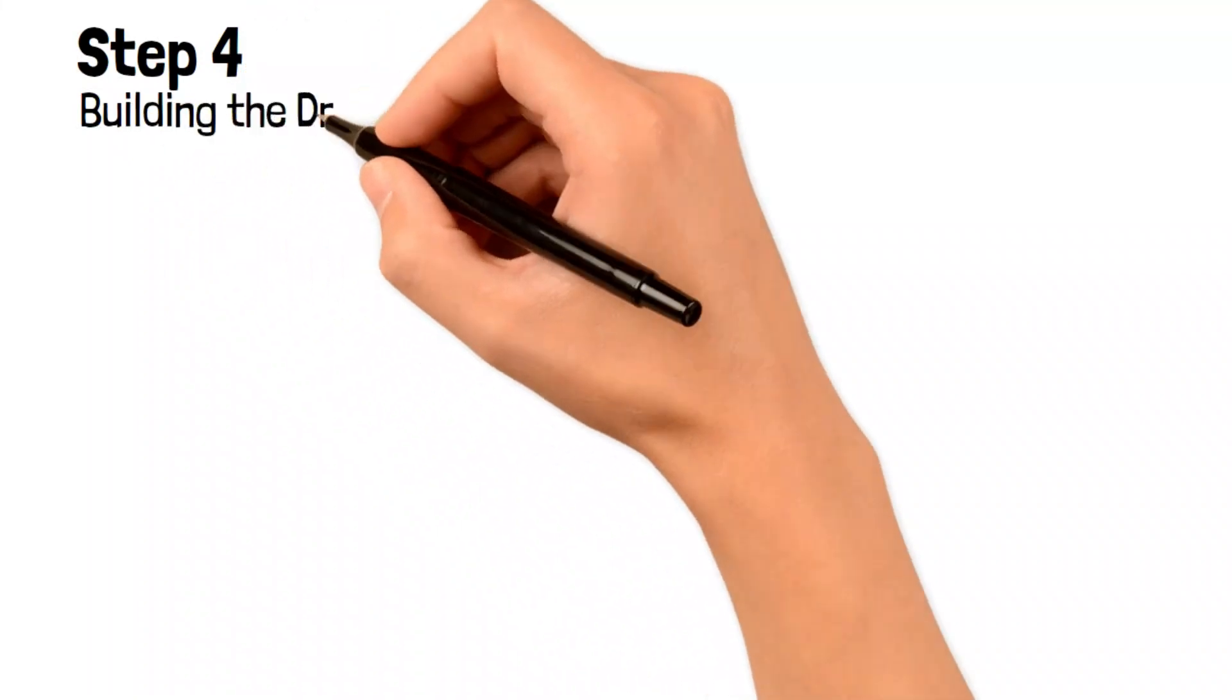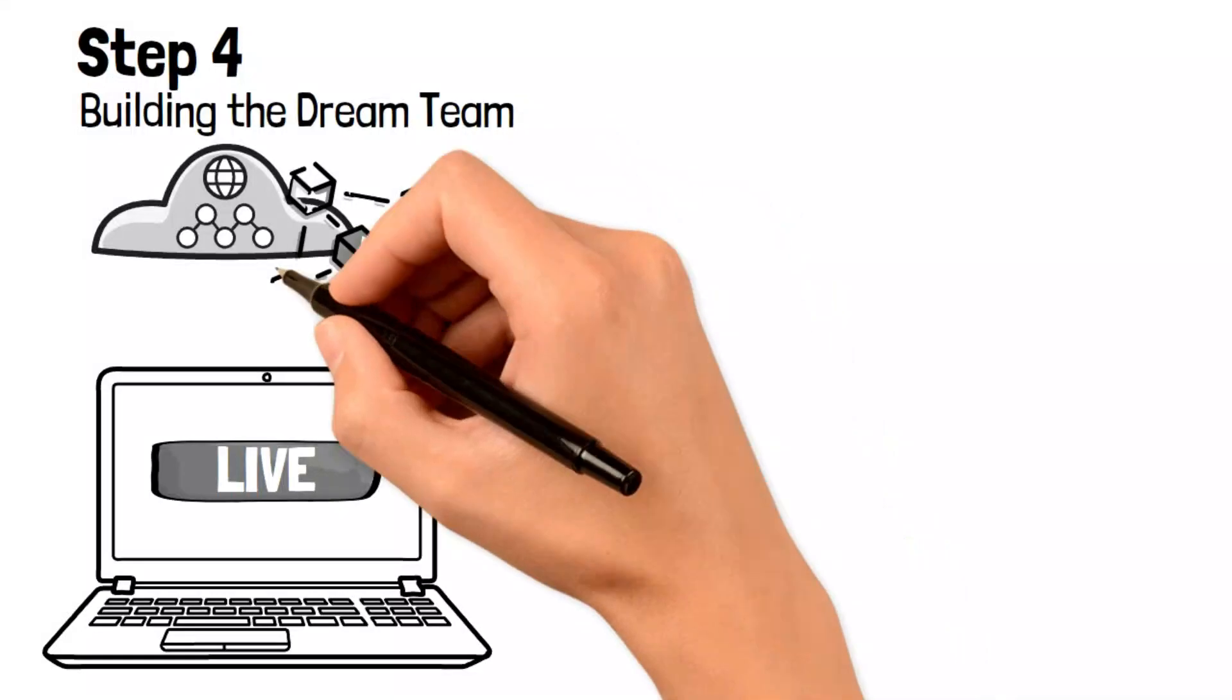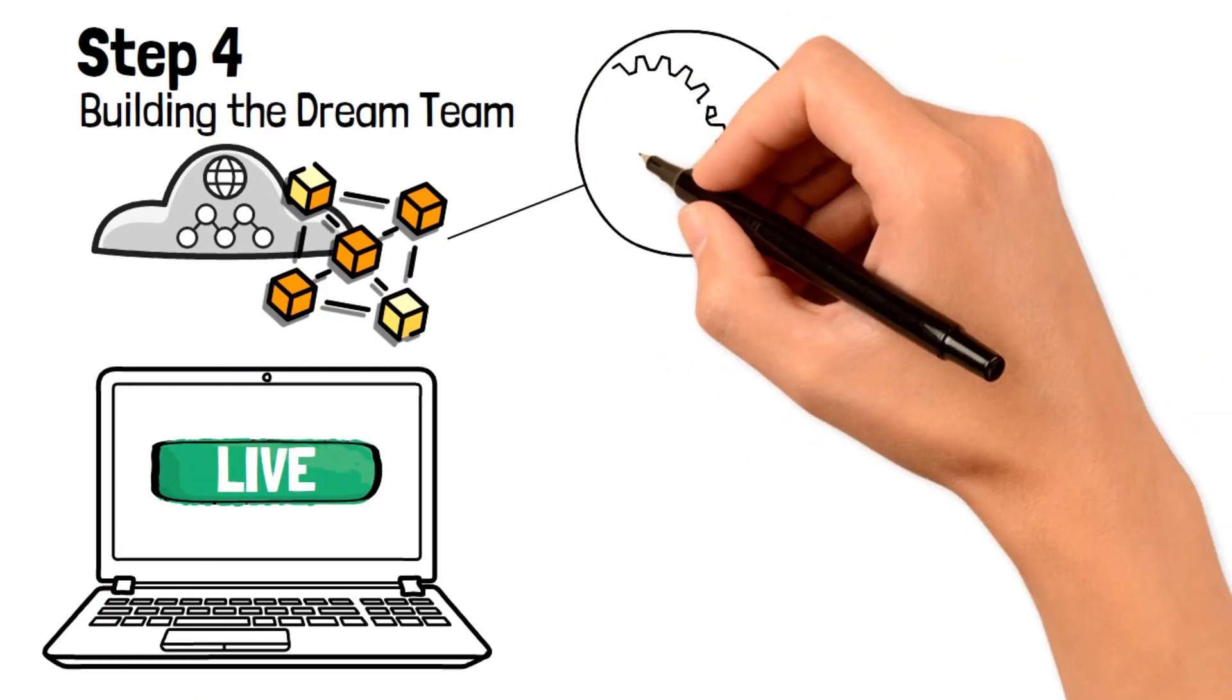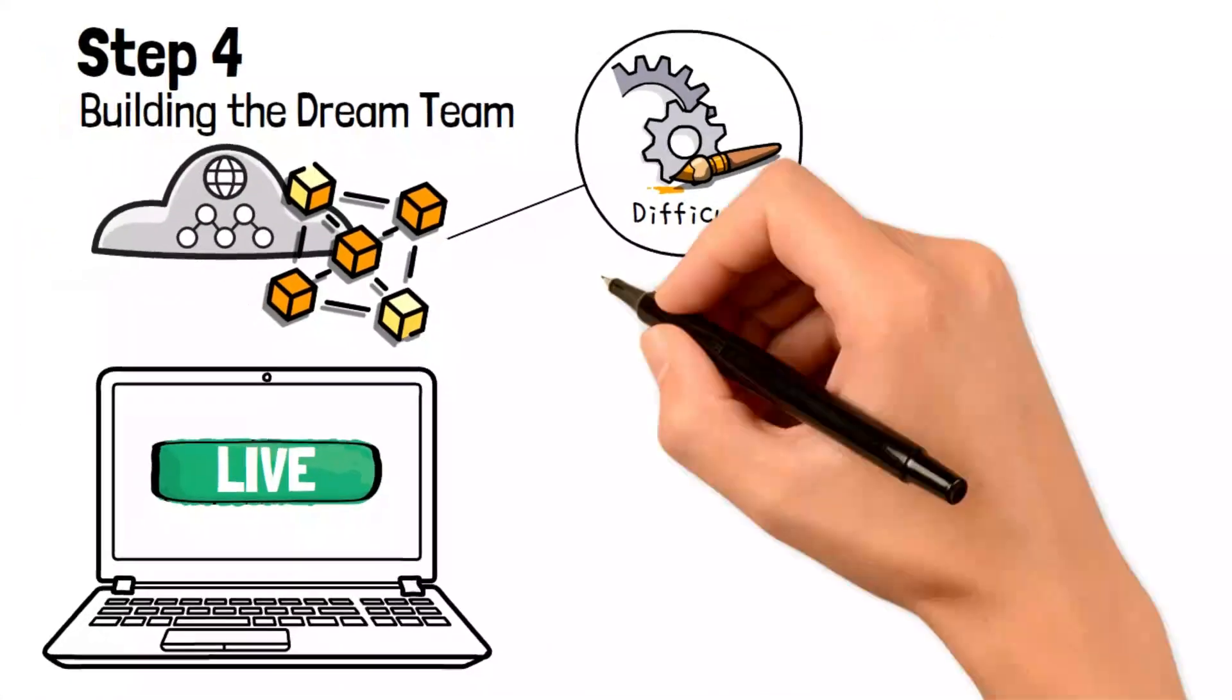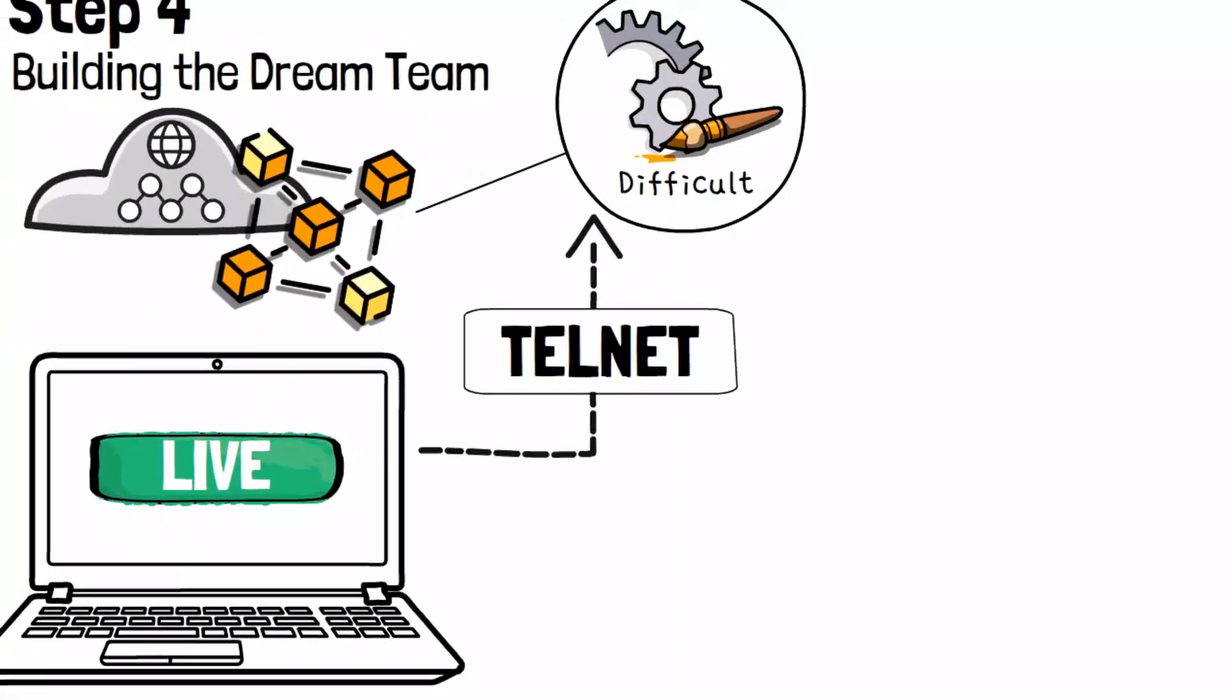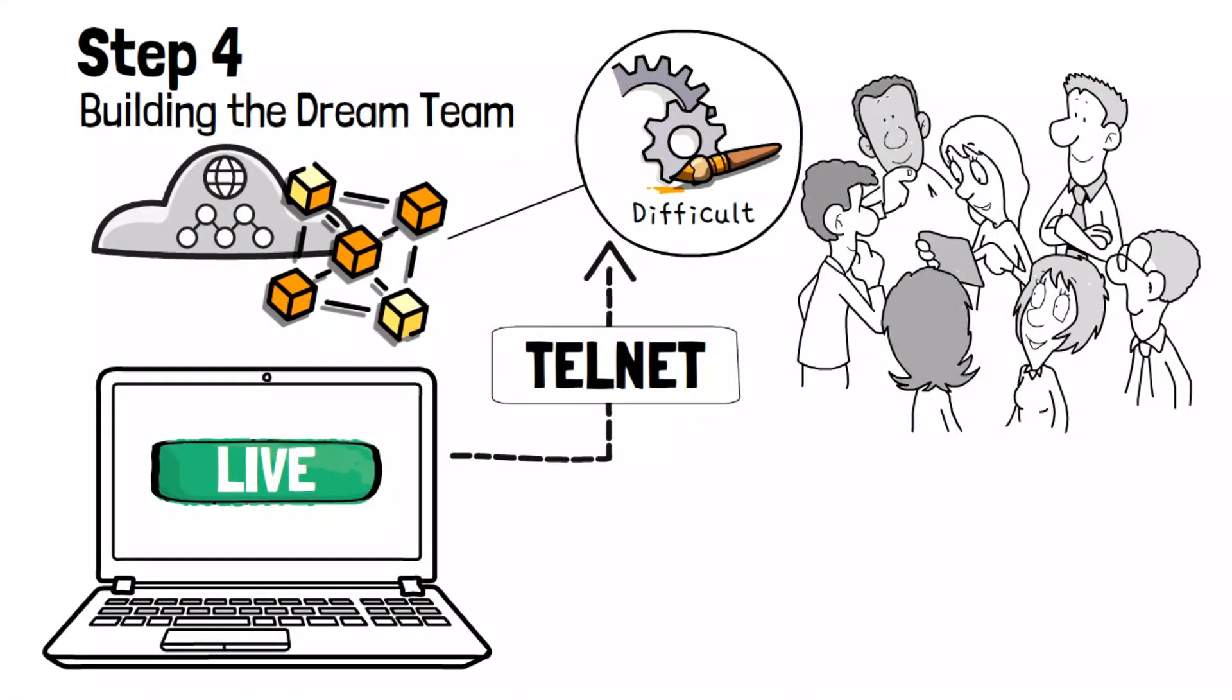Step Four: Building the dream team. If you need to become an expert in blockchain development, getting external assistance is crucial to bring your ideas to life. Once your blockchain is live, altering its fundamental concepts and rules becomes challenging. To avoid potential issues, use testnet to test and ensure everything works as intended.